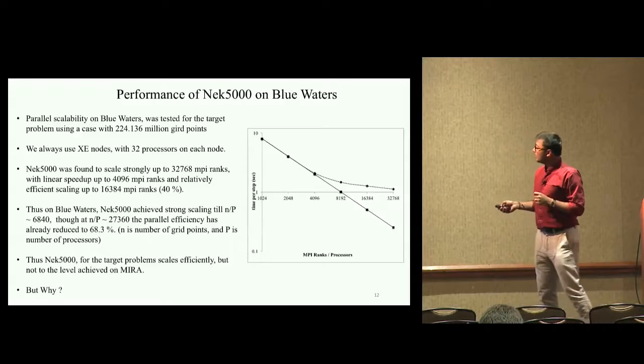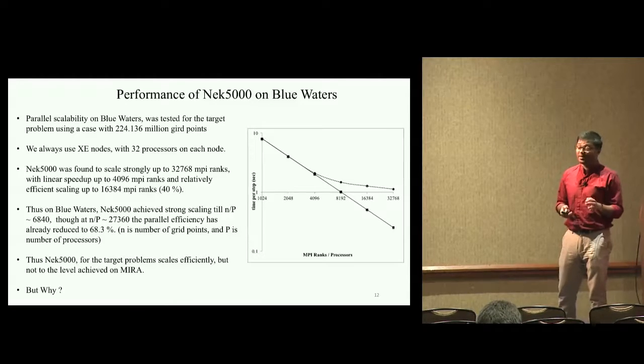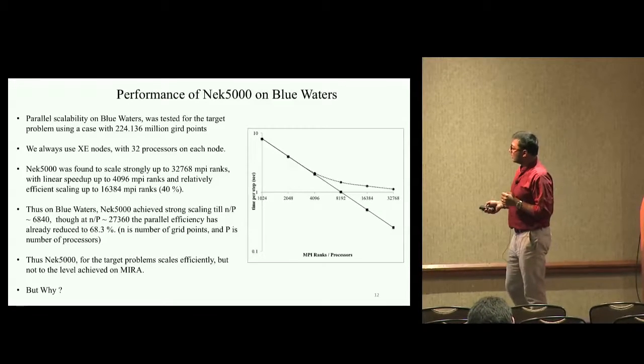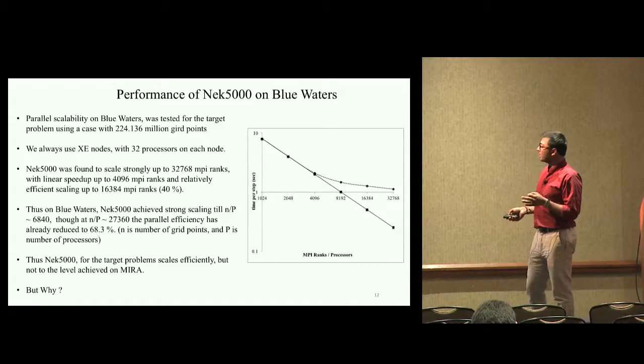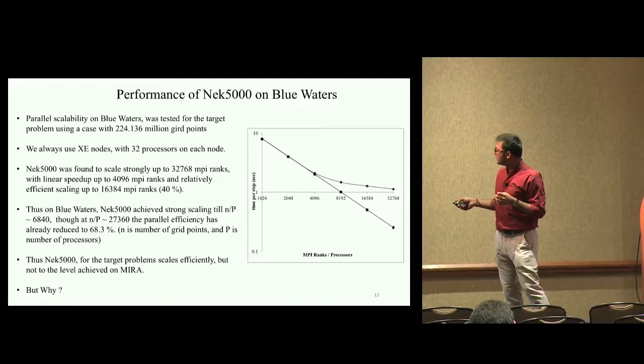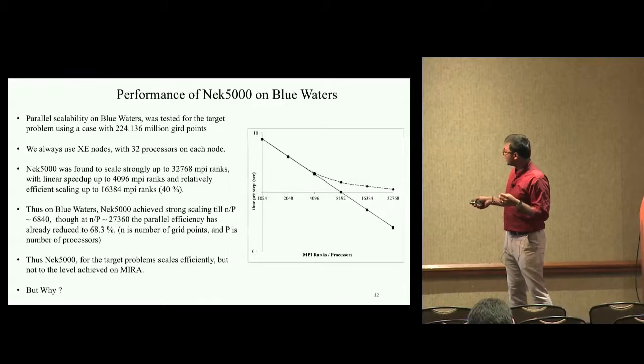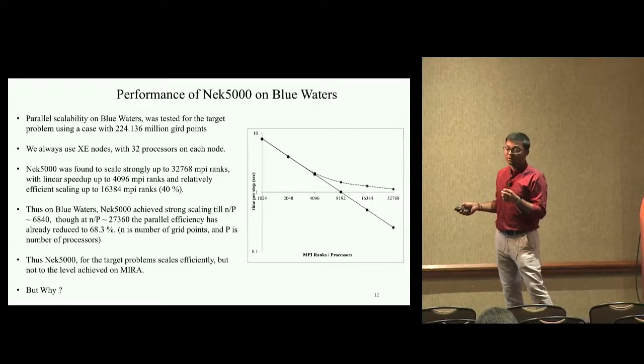For scalability, on Blue Waters we were able to scale strongly up to 32,768 MPI ranks. But our efficiency starts to drop appreciably from MPI rank of 8192, which is at N by P of 27,360. We get around 68 to 70 percent efficiency at 8192, around 40 percent efficiency at 16,384, and at 32,768 the efficiency is down to almost 20 percent.